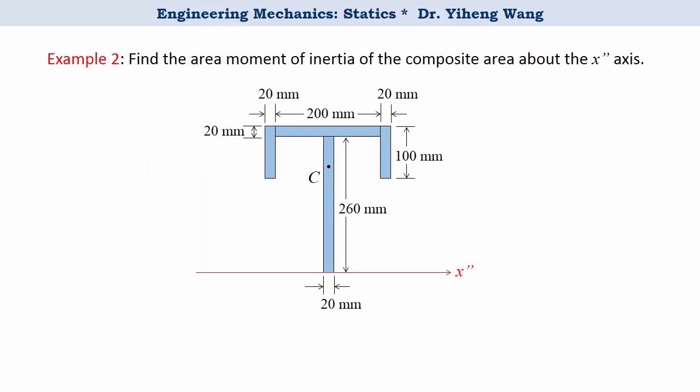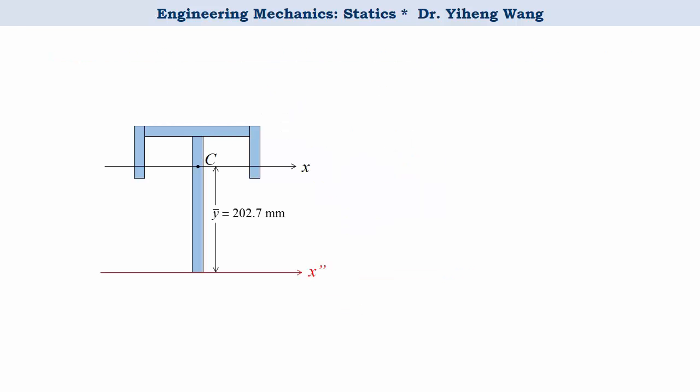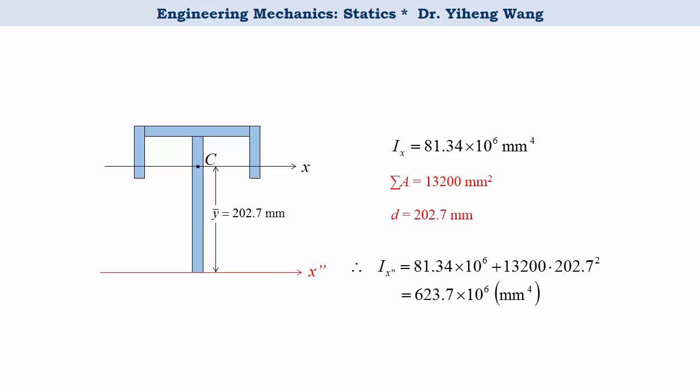Now normally this is unusual, but just for practice, what if we are also asked to find the moment of inertia of this same composite area about the x double prime axis? Since we already know Ix — the moment of inertia about the centroidal x-axis — and we know the total area of the composite area and the perpendicular distance between these two parallel axes, we can simply apply the parallel axis theorem to the entire composite area to get the moment of inertia about the x double prime axis. As you can see, it is a lot larger than Ix, because for all parallel axes the moment of inertia calculated about the centroidal axis is always the smallest one.